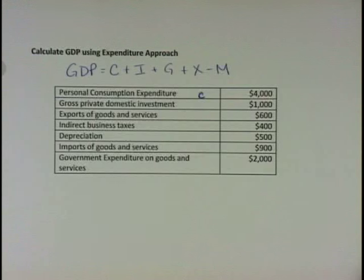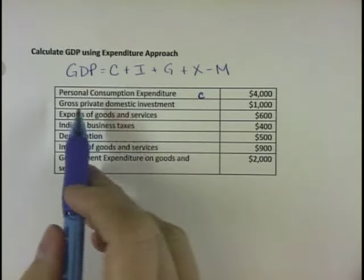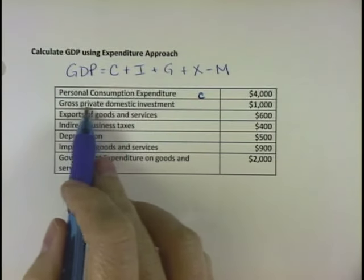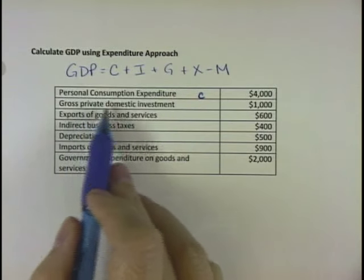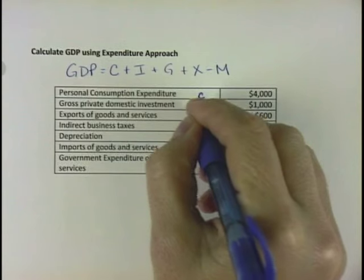The next one, I, is investment. Now investment, as far as GDP is concerned, is not financial investment. Investment here is going to be firms buying capital, buying new homes, and additions to inventories. So the I here is going to be gross private domestic investment.